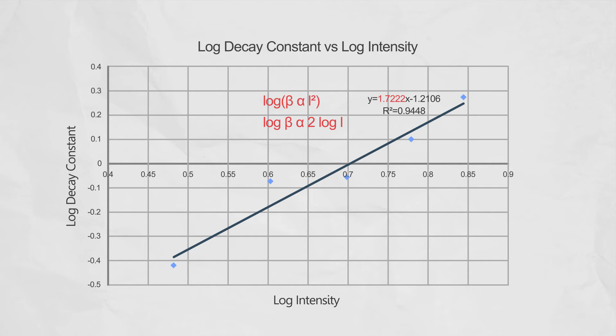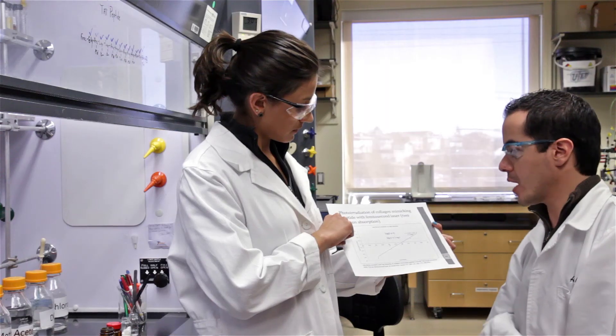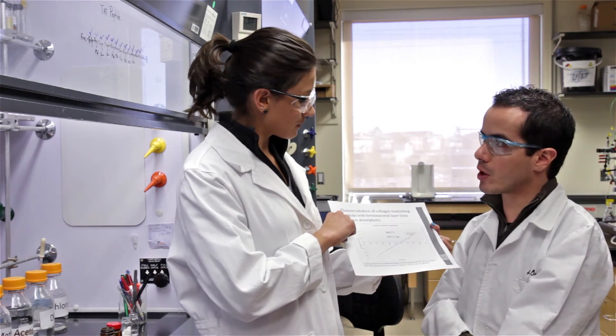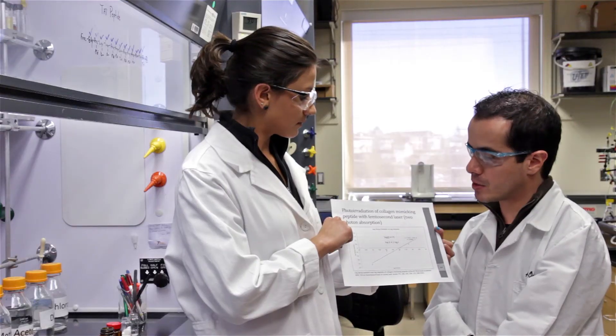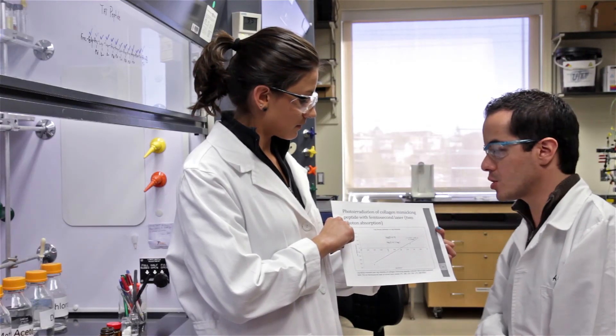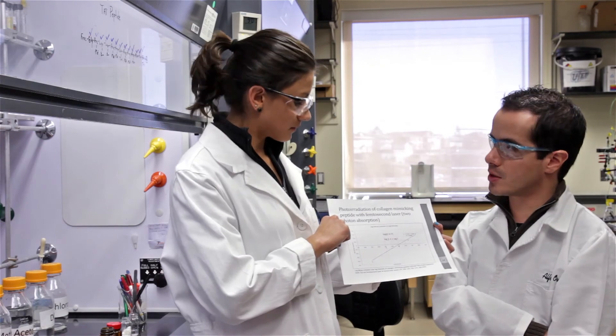And what we have in our graph is that our slope is actually very close to two. If you have a one-photon absorption, then the slope would be closer to one. So this is a pretty good indicative that our photoreactive collagen-mimicking peptide is undergoing photolysis through a two-photon absorption process.